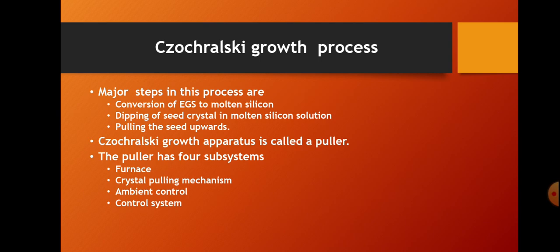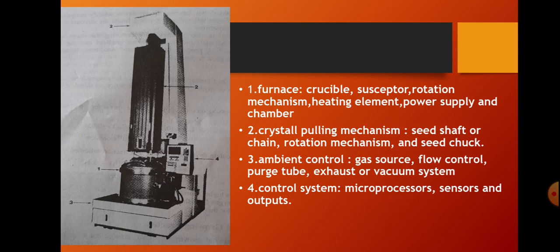Let us see the block diagram of the CZ process. The CZ growth apparatus is called a puller. A puller has four subsystems: first is the furnace, second is the crystal pulling mechanism, third is ambient control, and fourth is the control system.